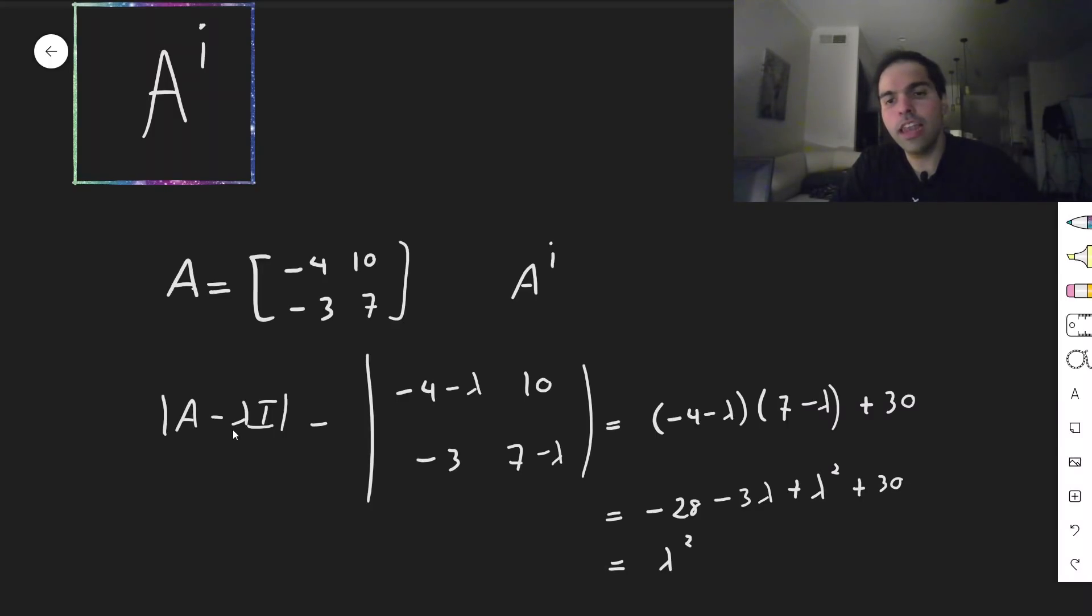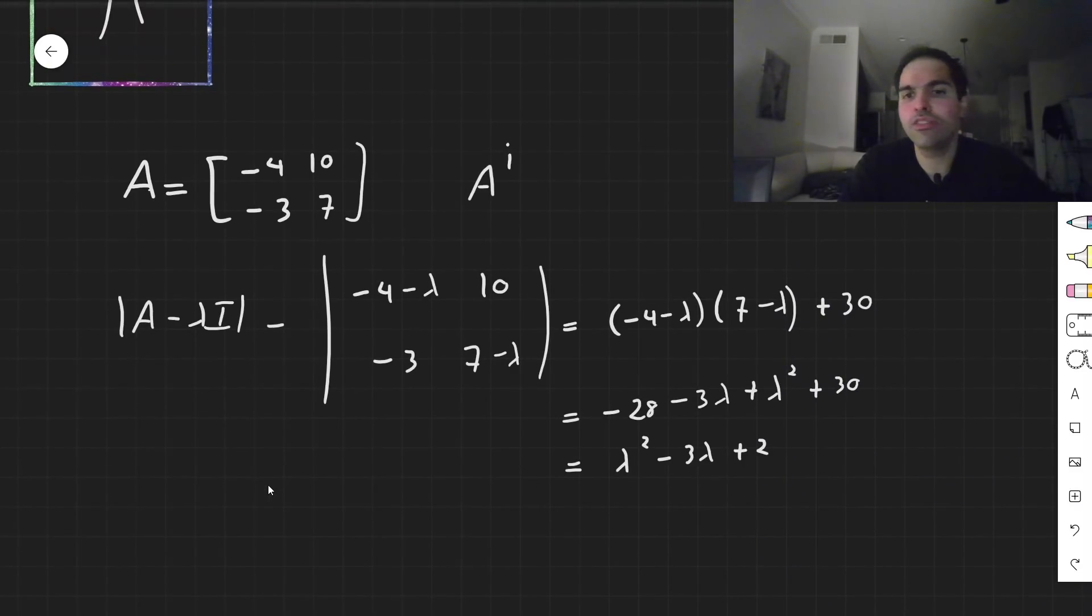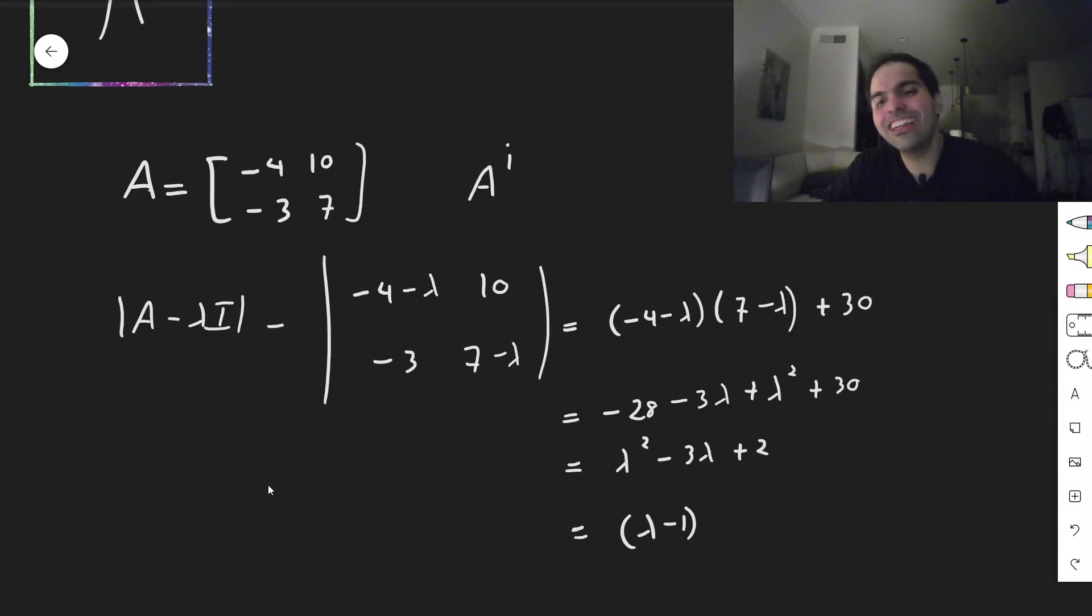Which simplifies to lambda squared minus 3 lambda plus 2, which I believe is just, of course, using the factoring method, we get that lambda minus 1 times lambda minus 2. And if you set it equal to 0, you get lambda equals 1 or lambda equals 2.